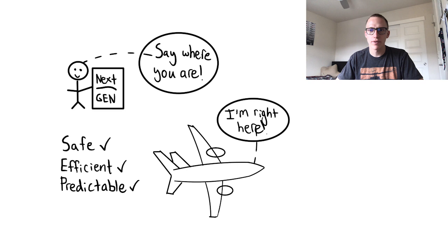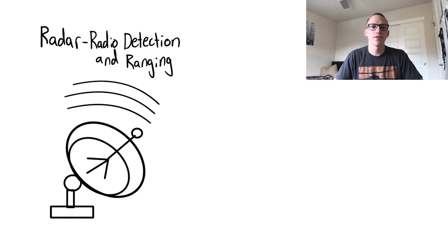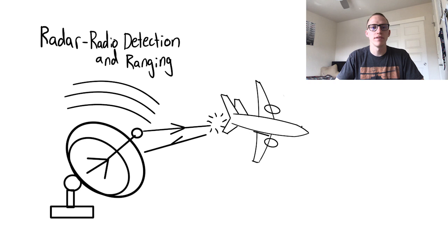Before ADS-B, other forms of tracking existed such as radar. Radar stands for radio detection and ranging. With radar, an antenna shoots out or transmits electromagnetic waves and these waves bounce off an object and return to usually the same antenna. A processor then determines properties of the object.